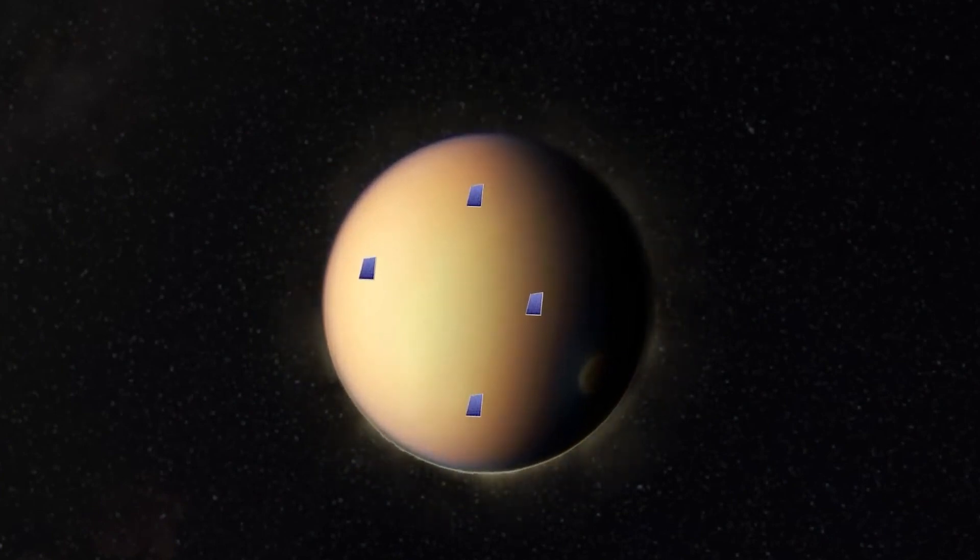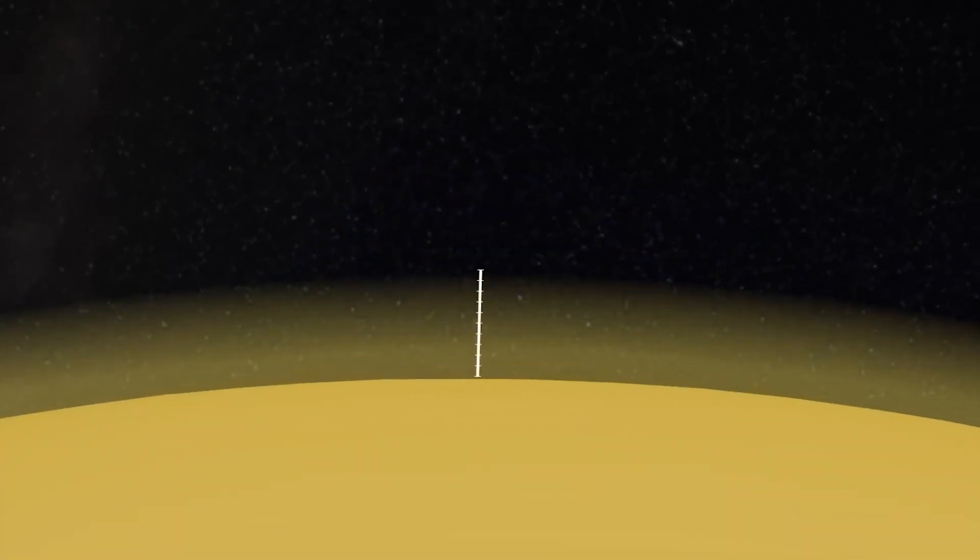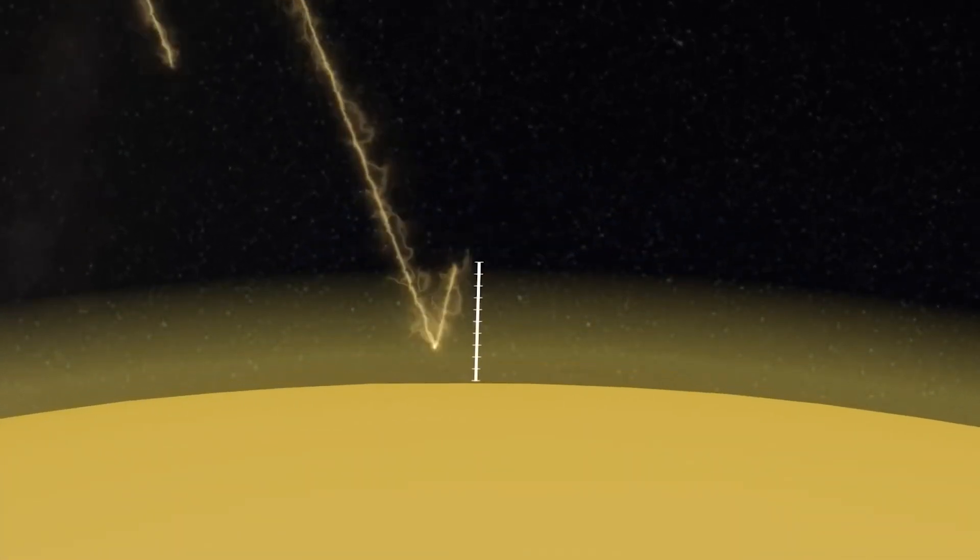These hydrocarbon lakes are believed to have formed as a consequence of methane precipitation, a phenomenon that is analogous to the rain on our own planet, yet distinctly exotic in nature.